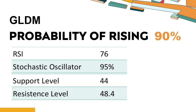The current stochastic oscillator of GLDM is 95%. When the stochastic oscillator rises above the 80 level, it is usually considered overbought, indicating that the stock may be due for a price pullback. An overbought condition occurs when a stock's price rises too fast and too high in a short period of time and can be a sign that buying pressure has exhausted.